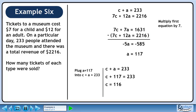Now we'll plug our A value of 117 into the equation C plus A equals 233. Solving for C gives 116. We can now answer the question: 117 adult tickets and 116 children's tickets were sold.